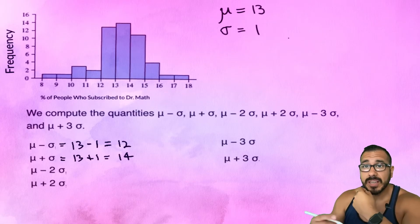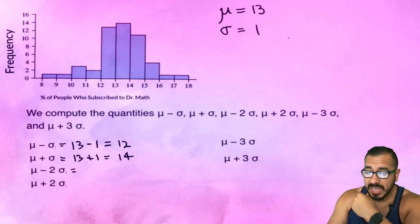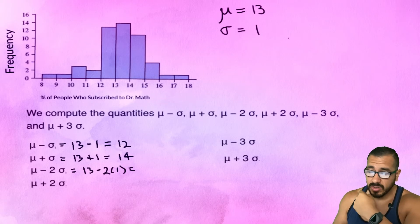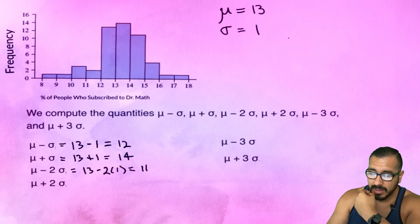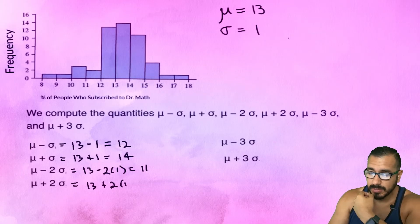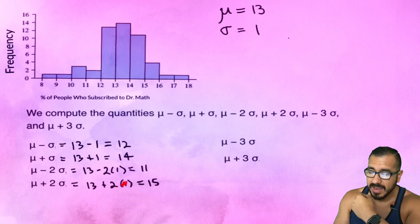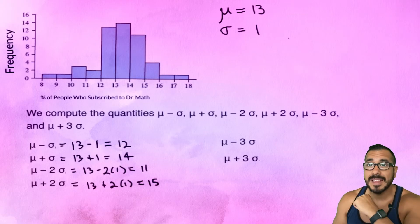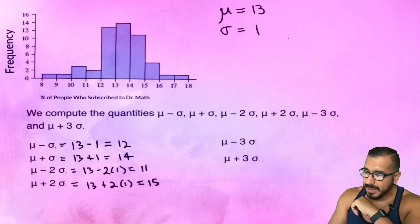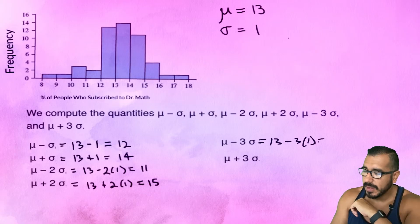Now for two standard deviations: mean minus 2 times the standard deviation is 13 minus 2, which equals 11. And 13 plus 2 times 1 equals 15. Remember to use correct order of operations — multiply first, then add or subtract. For three standard deviations: 13 minus 3 times 1 equals 10, and 13 plus 3 times 1 equals 16.